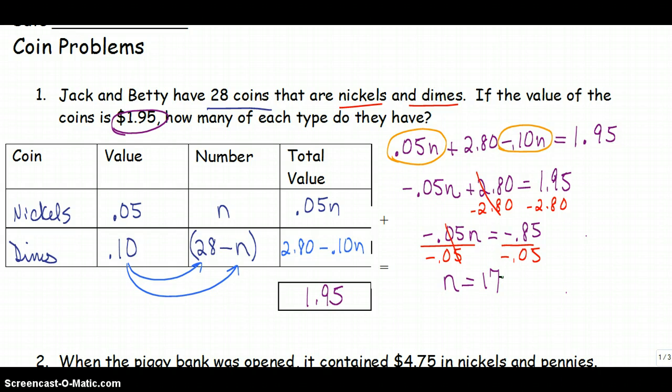And because I was careful when I chose my variable, I chose n for nickels, I don't have to go back and guess what I found. I know that I have 17 nickels. And if I have 17 nickels, I know that my dimes are 28 minus however many nickels. So 28 minus 17 is equal to 11. So I have 11 dimes and 17 nickels.